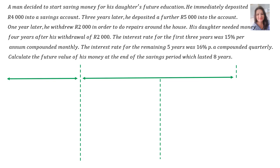A man decided to start saving money for his daughter's future education. He immediately deposited 4000 rand into a savings account. Three years later, he deposited a further 5000 rand into the account. One year later, he withdrew 2000 rand in order to do repairs around the house. His daughter needed money four years after his withdrawal of 2000 rand. The interest rate for the first three years was 15% per annum compounded monthly. The interest rate for the remaining five years was 16% per annum compounded quarterly. Calculate the future value of his money at the end of the savings period, which lasted eight years.